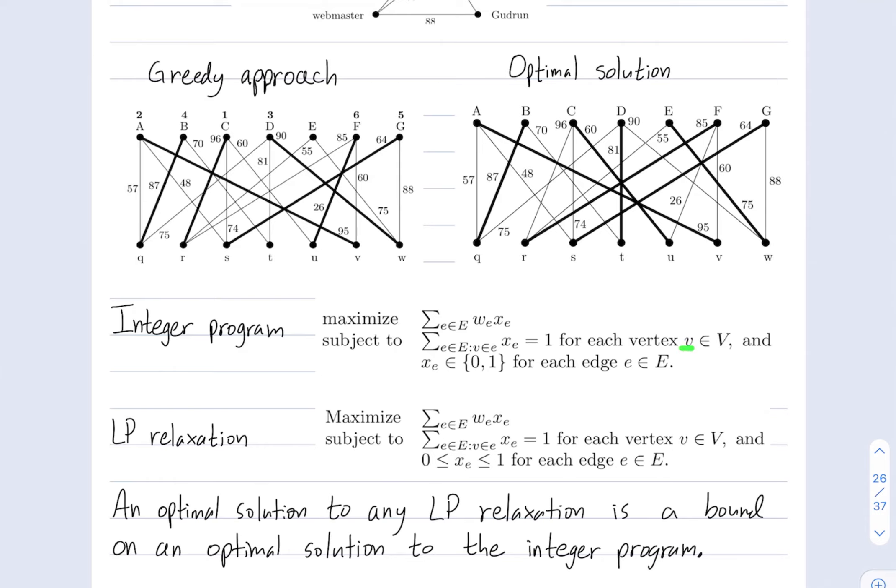So, for every vertex, little v, when you sum over all the edges in your graph that contain that vertex, you should get the value of 1, meaning that vertex is contained in exactly one edge.